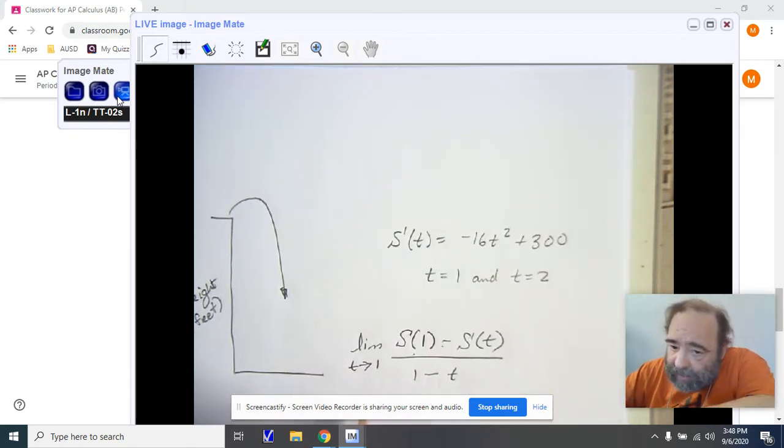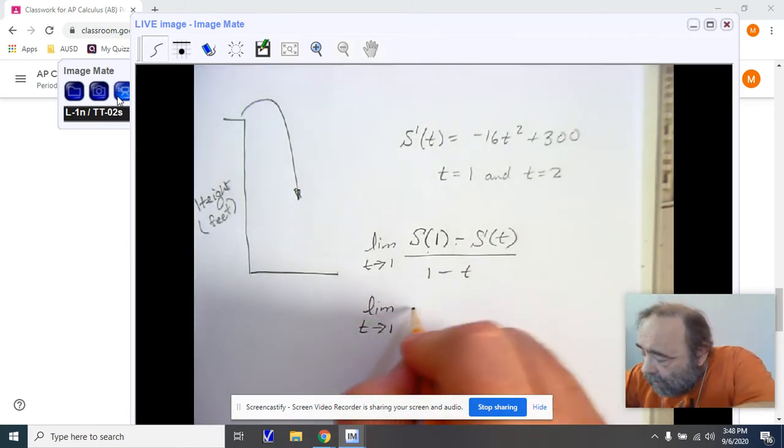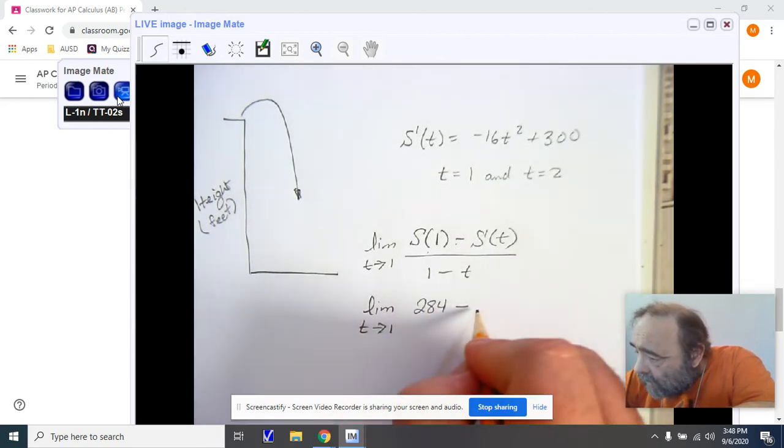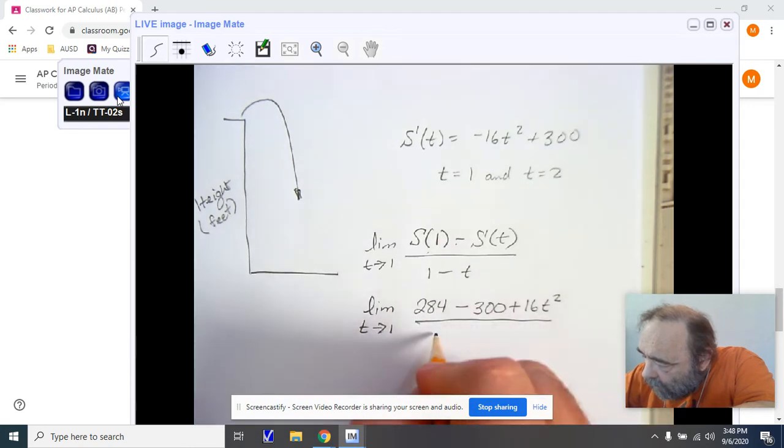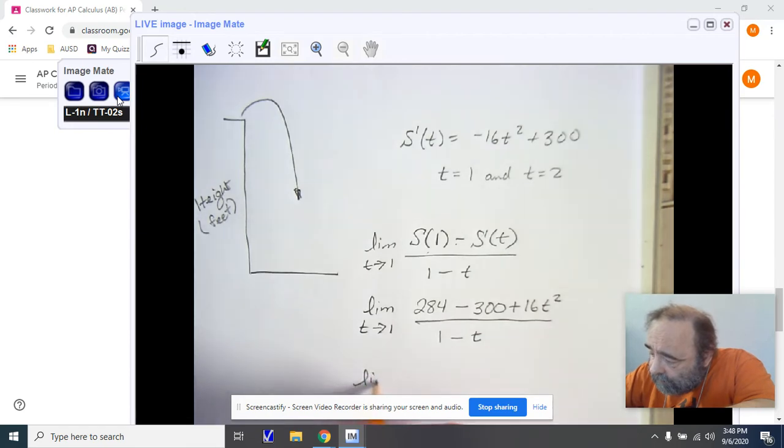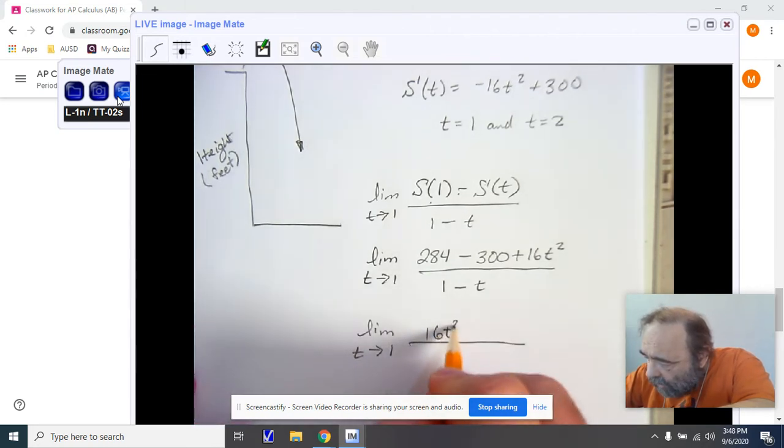So I have my limit as t approaches one for 284 minus 300 plus 16t squared all over one minus t. Now, when I simplify this, always remember to write your statement down and then simplify. You're going to be left with 16t squared minus 16 over one minus t.